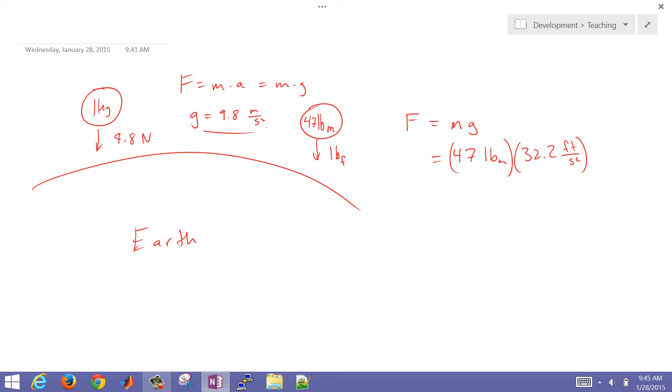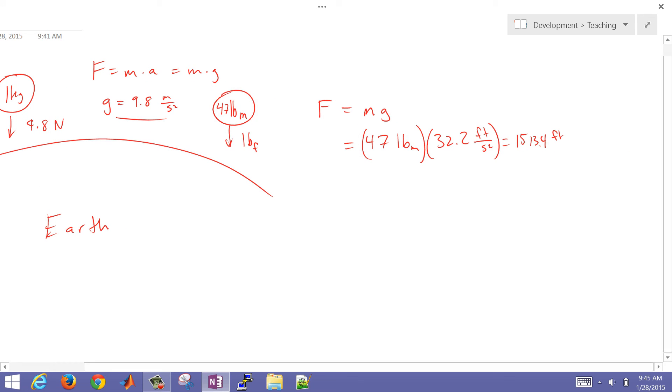that's going to be 47 pound mass times 32.2 feet per second squared, which is equivalent to the 9.8 meters per second squared. That's going to give us 1513.4 foot-pound mass per second squared. These are confusing units.